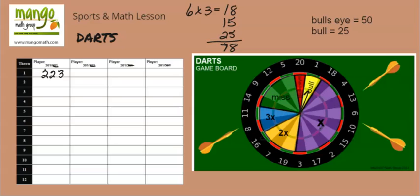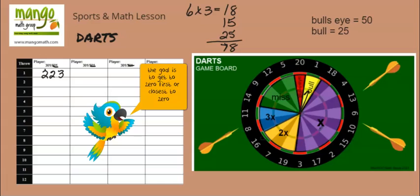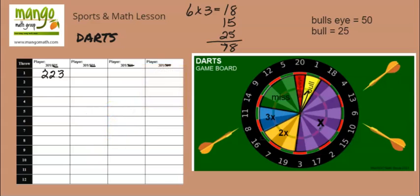On the next round of throws, students start at that new score of 223. Students will need to do multiplication, addition, and then subtraction, so there are lots of steps of mathematics you get to practice when you play the game of darts. Enjoy!